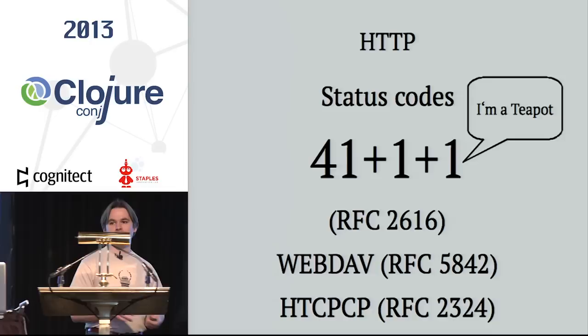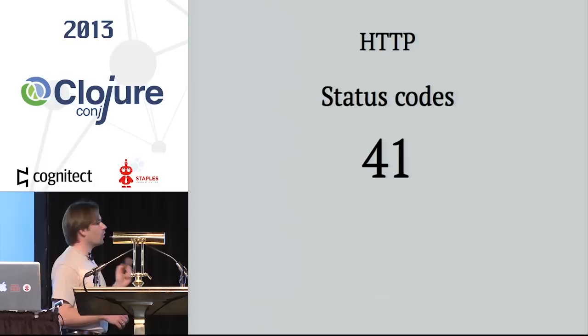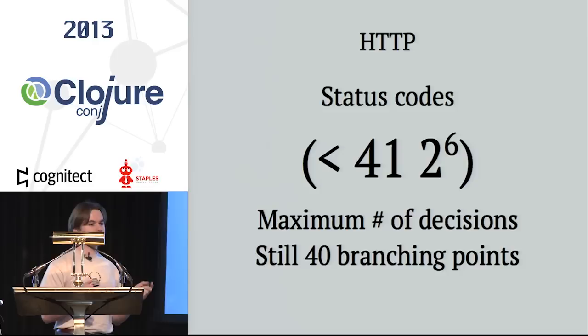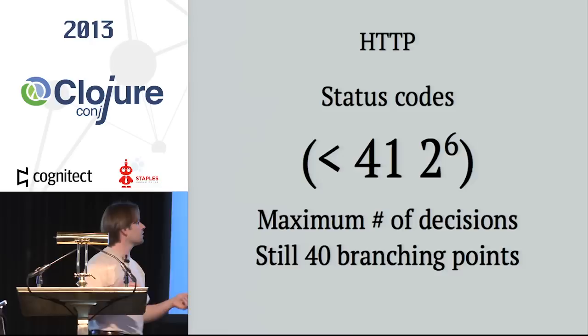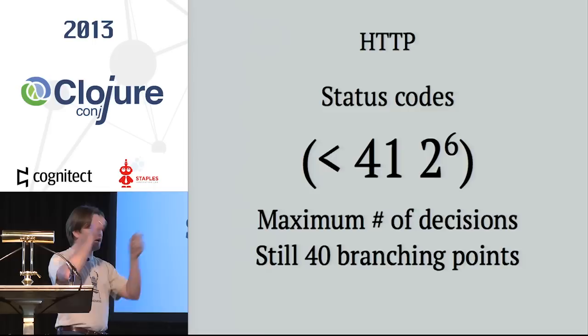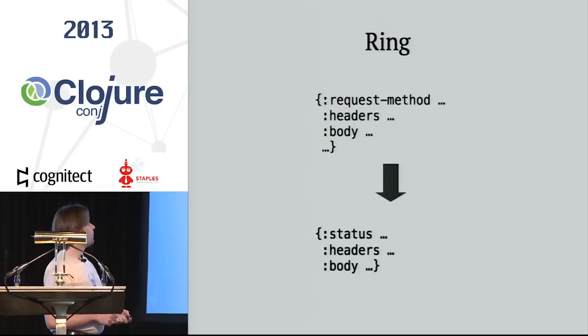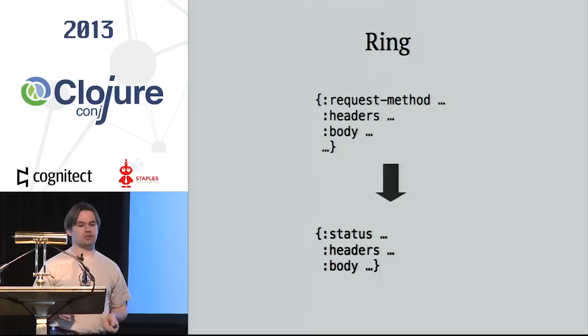When you want to make use of all of the status codes, you must make a lot of decisions. When you think about a binary tree of decisions, we need about two to the power of six decisions. Even when we cut some branches down, we still need about 40 branching points — that's a lot of work. In general, you won't need to use every status code in your project.